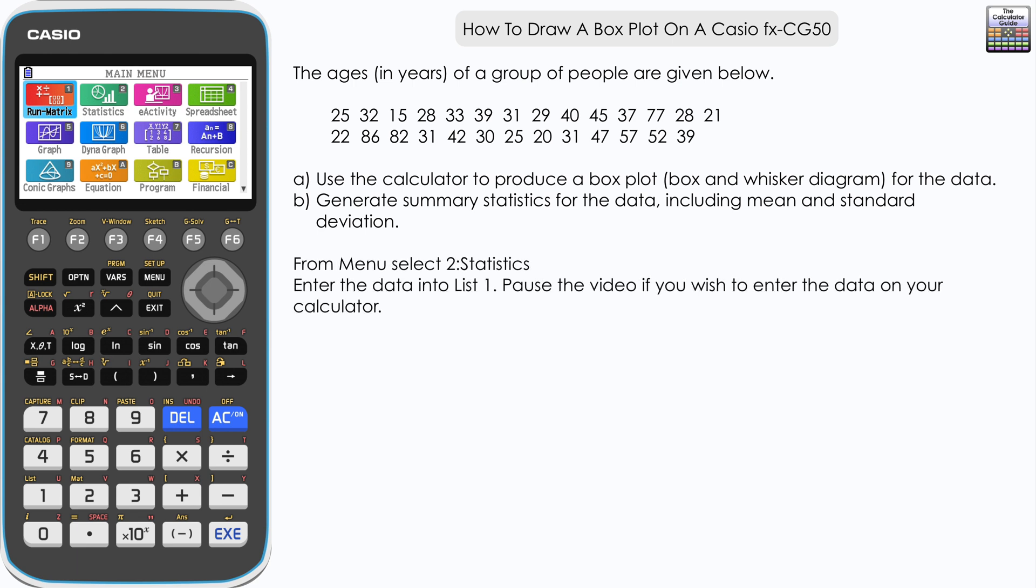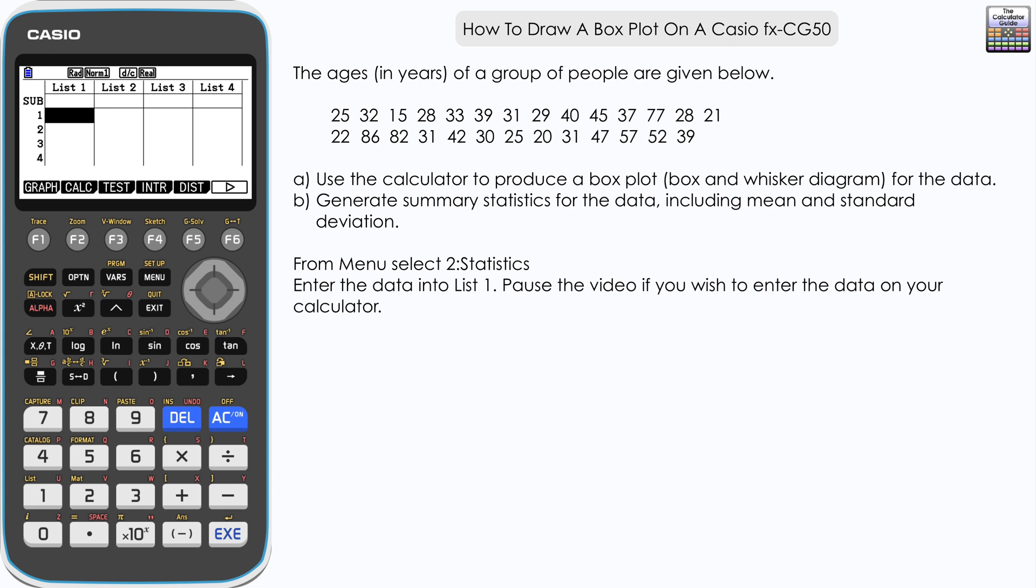From the main menu we want to choose 2 for statistics, and then we are going to enter the data into a list. Now I'm going to choose List 1. You can choose whichever list you like, but for convenience we'll use List 1.